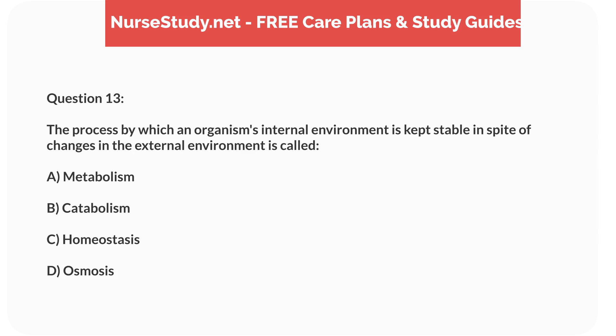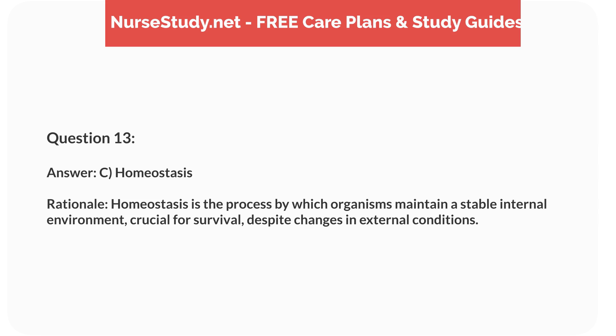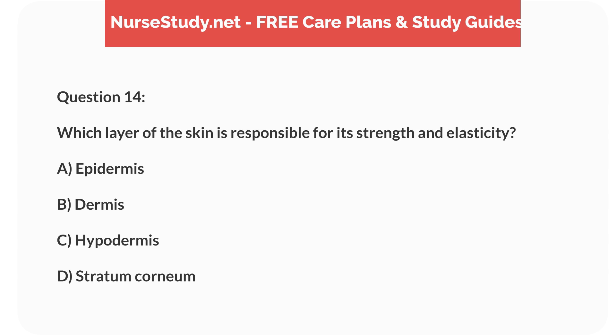A) metabolism, B) catabolism, C) homeostasis, D) osmosis. Answer: C, homeostasis. Rationale: Homeostasis is the process by which organisms maintain a stable internal environment, crucial for survival despite changes in external conditions. Question 14: Which layer of the skin is responsible for its strength and elasticity? A) epidermis, B) dermis, C) hypodermis, D) stratum corneum.